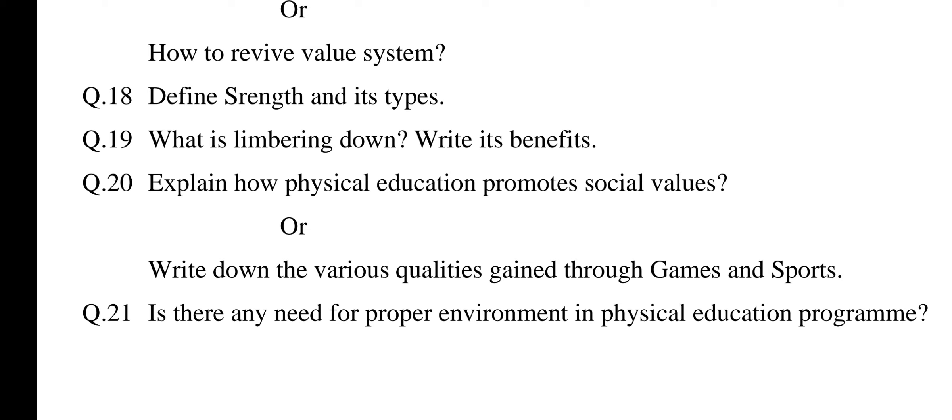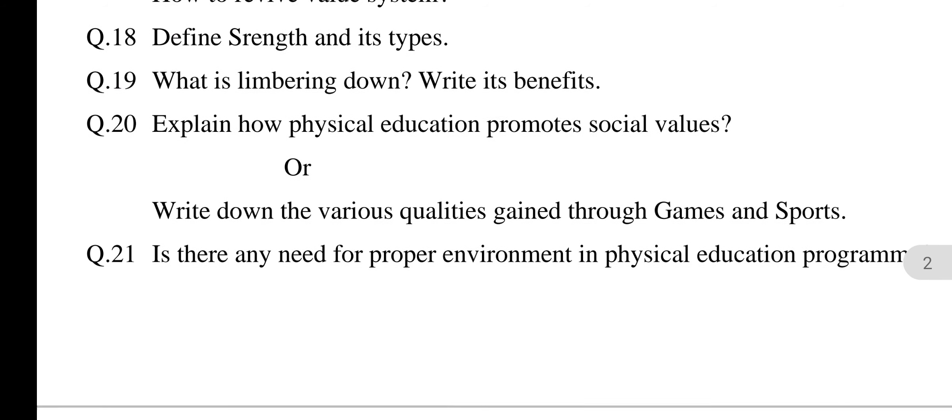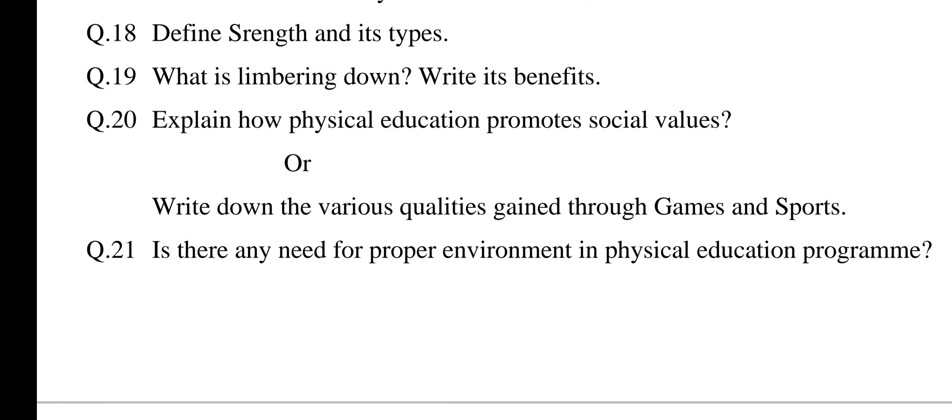Question 18: Define strength and its types. From Chapter 1 — Physical Fitness. Strength is the ability of muscles to overcome resistance; it can be defined as the amount of force a muscle can exert. Types of strength: There are two main types — static strength and dynamic strength. Dynamic strength has three sub-types: 1: Maximum strength, 2: Explosive strength, 3: Strength endurance.